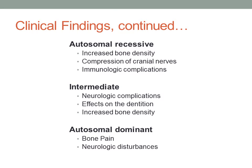In the autosomal recessive form of osteopetrosis, increased bone density due to lack of osteoclast function can cause obliteration of bone marrow, compression and paralysis of cranial nerves, and difficulty fighting infections such as pneumonia. Prognosis for these patients is poor, and most do not survive the first decade of life.